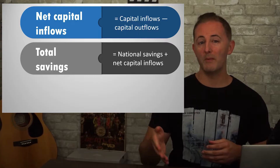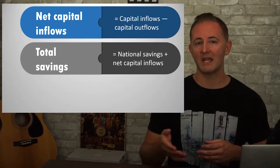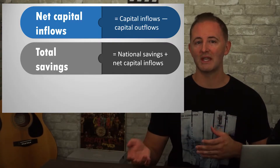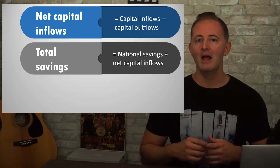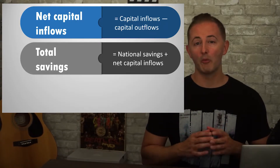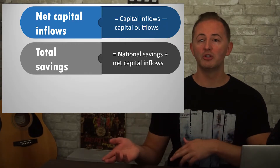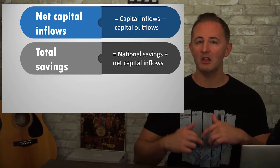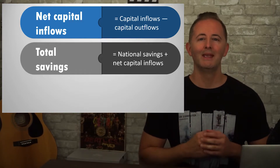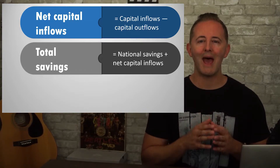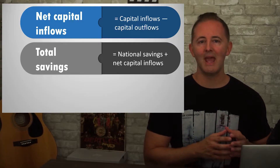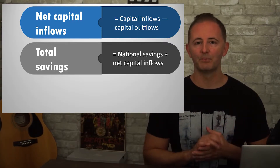If more people in the US are saving in foreign banks than people from other countries are saving here, then net capital inflows are negative. If more people from other countries are saving here, then net capital inflows are positive. Either way, add that number to the national savings and you get total savings.